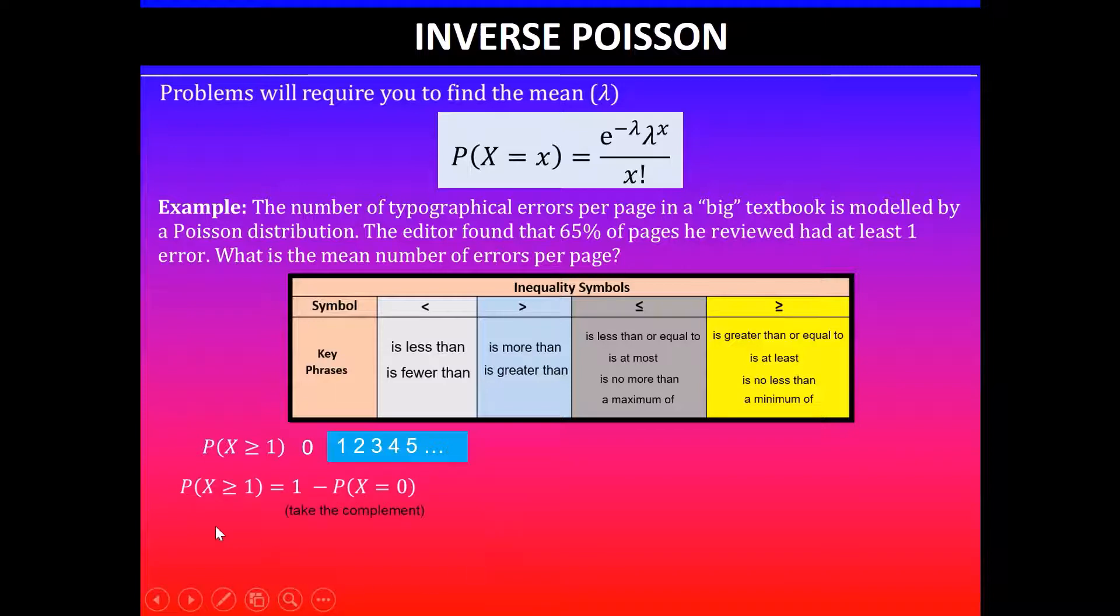Taking the complement, I can then say that probability when x is greater than or equal to one is the same as one minus probability when x is exactly equal to zero.